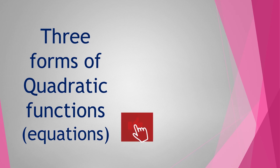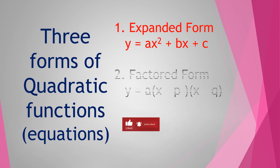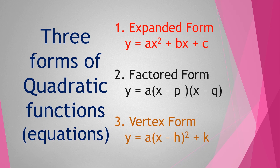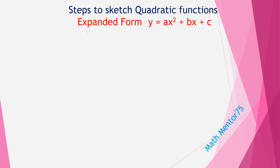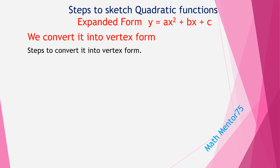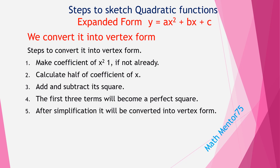So far we have learned that there are three forms of quadratic equations: expanded form, factored form, and vertex form. In our previous lesson we learned how to sketch a quadratic curve if it is in expanded form. First, we convert it into vertex form by following these steps: make the coefficient of x² equal to one; calculate half of the coefficient of x; then add and subtract the square of that half. The first three terms then become a perfect square, giving us vertex form after simplification.